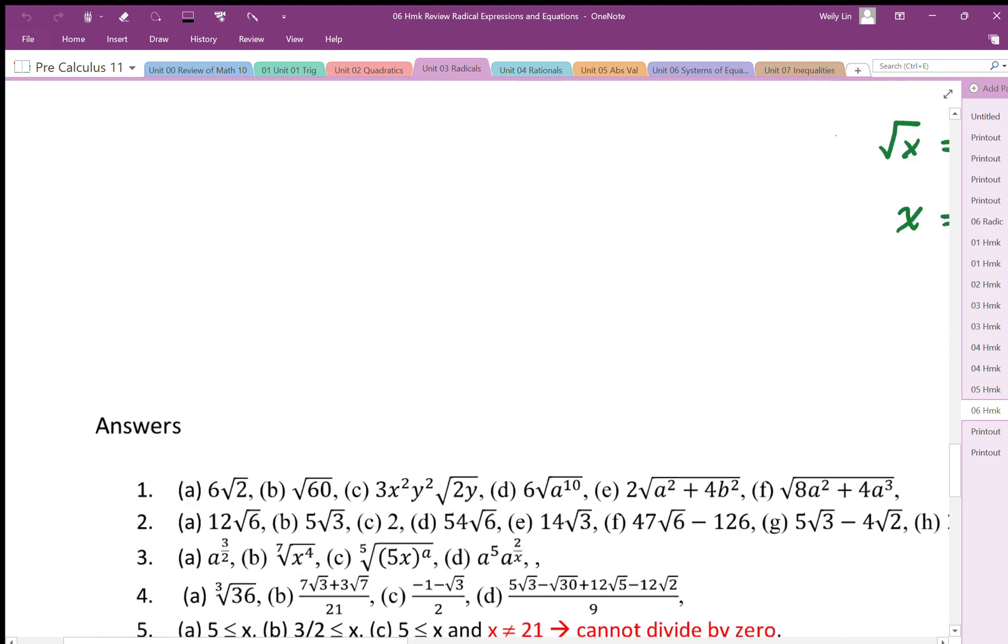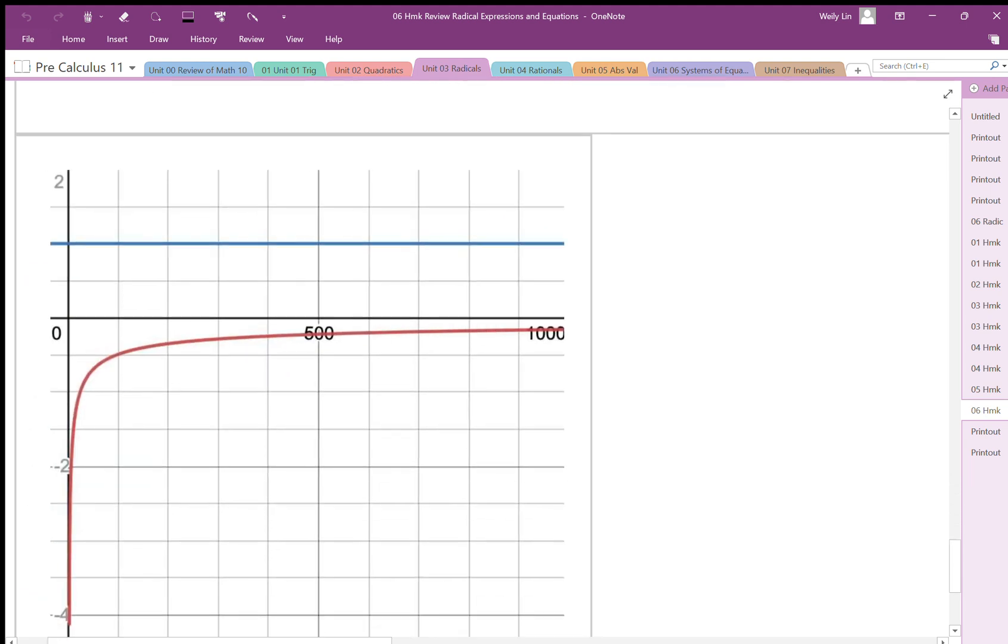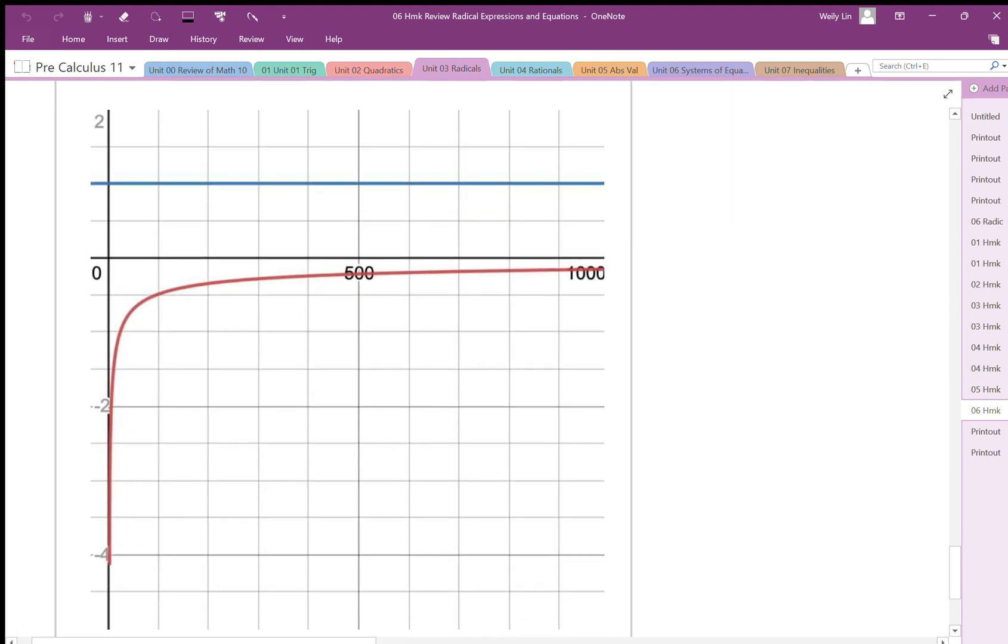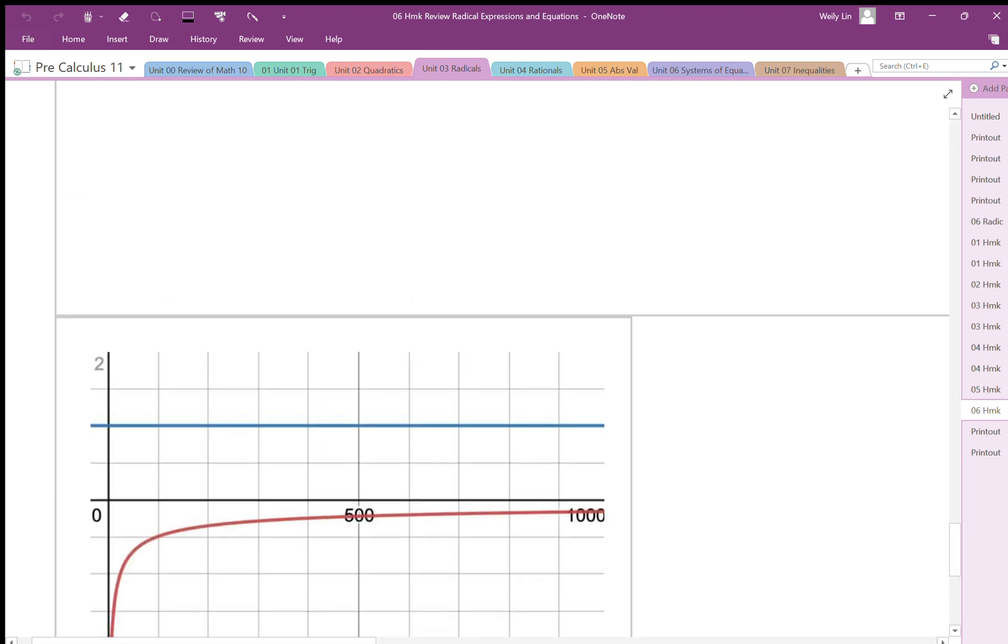When we take a look at the graph of this, the graph looks like this. So when I graph this, there's my square root equation. Now it has an asymptote at zero, and so that's the left side of the equation.